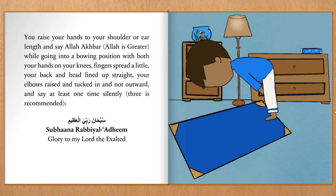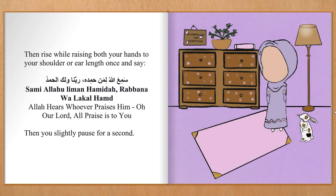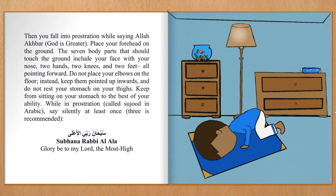Subhan Rabbi Al-Azim — Glory to my Lord the Exalted. Then rise while raising both your hands to your shoulder or ear length and say Allahu Akbar — God is greater. Then say Allahu Akbar — God is greater — and place your forehead on the ground. The seven body parts that should touch the ground include your face with your nose, two hands, two knees, and two feet, all pointing forward.